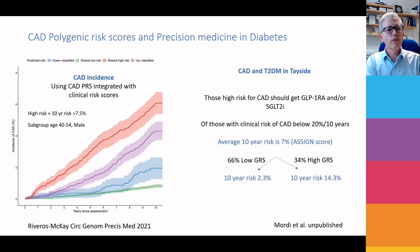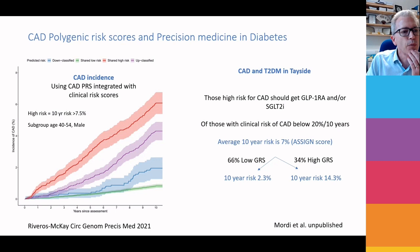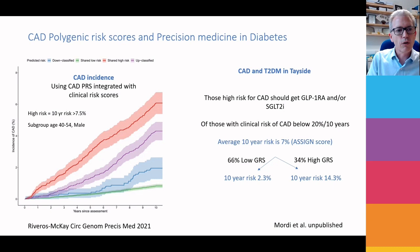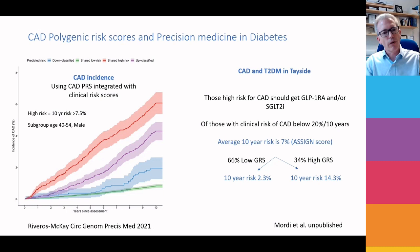Briefly, on polygenic risk scores and coronary artery disease: taking a group of men aged 40 to 54 and looking at their incidence of coronary artery disease, the red line represents people with a high clinical risk score and a high polygenic risk score — as you'd expect, they've got high risk. The green line is low clinical risk with low polygenic risk. The purple line has a low clinical risk but a high polygenic risk score — so they've been uplifted in terms of their risk. And the blue line has a high clinical risk but a low polygenic risk score, and they've been downshifted in terms of their risk.